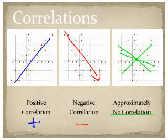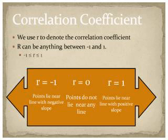When we talk about correlation, there's a certain value we use called the correlation coefficient. We use a lowercase r to denote the correlation coefficient. Note that there's an uppercase R showing right here, but that's just a typo — it should be a lowercase r. This lowercase r correlation coefficient can be anything between negative one and one.